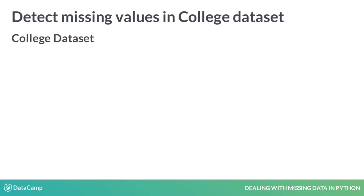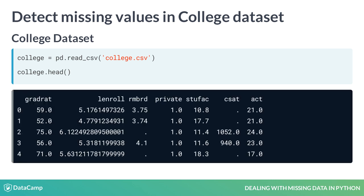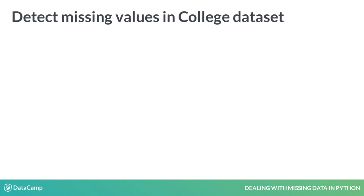Let's use the college data set, which contains various details of college students, as an example. We'll load the data using pd.read_csv of college.csv. The first step in analyzing the data set is to read and print a snippet of the data set, so we'll print the head of the college DataFrame. All columns have float values, but if you observe clearly you can see that a few data points are filled with a period. This suggests that missing values might be represented by a period. However, we can confirm this only through further analysis.